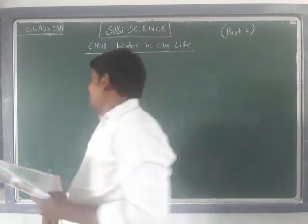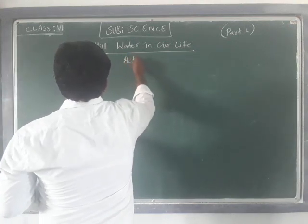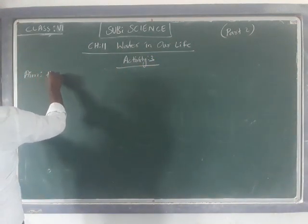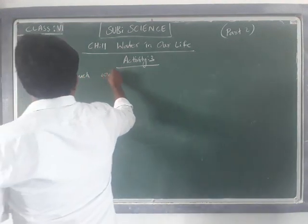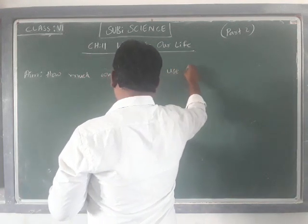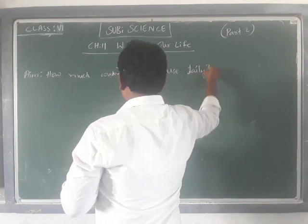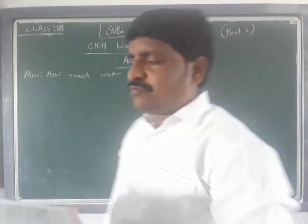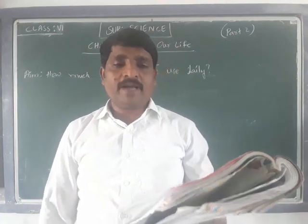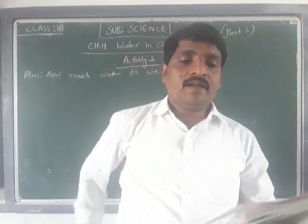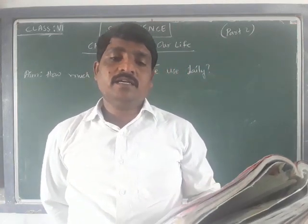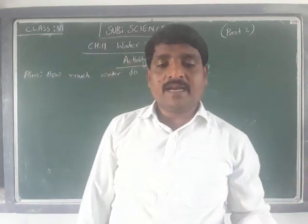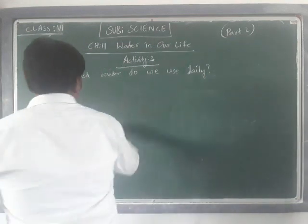Today we are going to discuss Activity 3, a continuation from last session. The aim of the activity is: how much water do we use daily? We use water for different purposes - can you estimate how much water is used in your family in a day? Record your estimation in Table 1, and also think about how much water can be reduced and write how much water we can save.